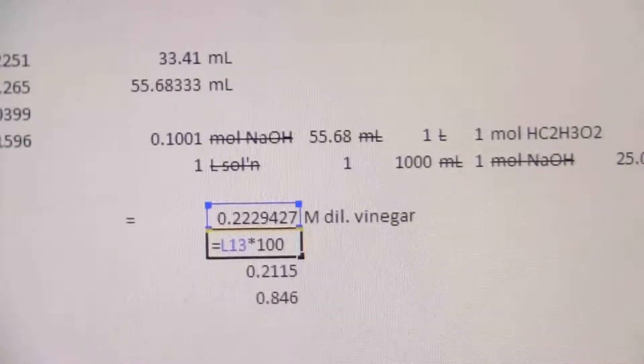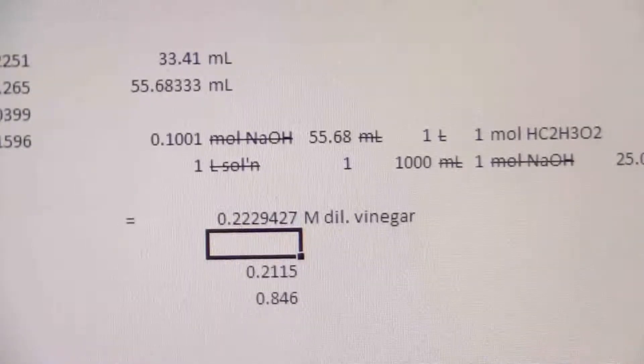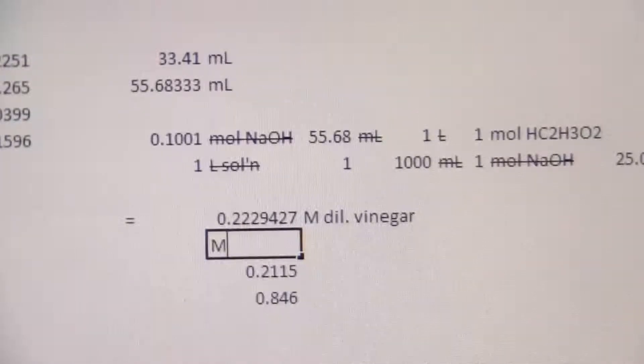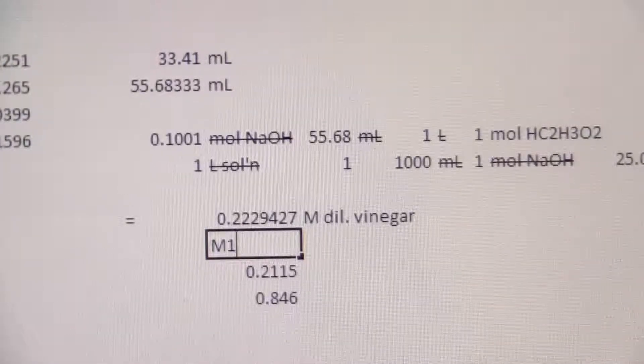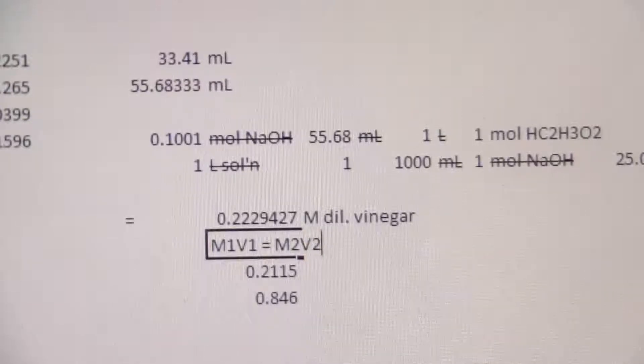You're just going through and taking that and accounting for that four times. See, this is our dilution equation. We have M1 V1 equals M2 V2.